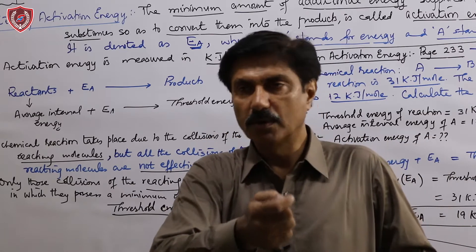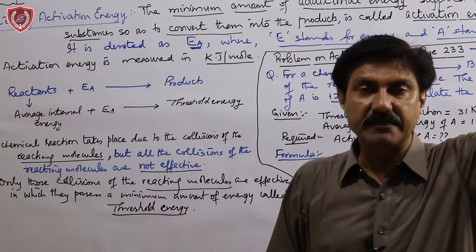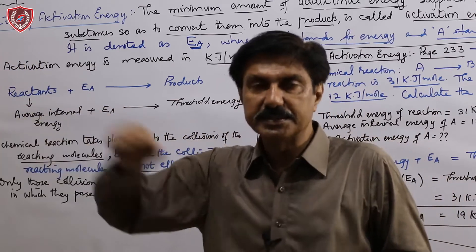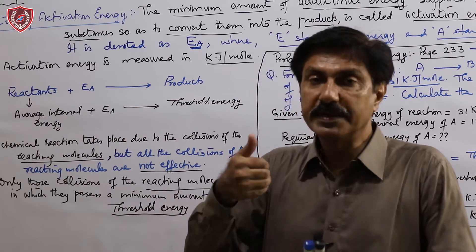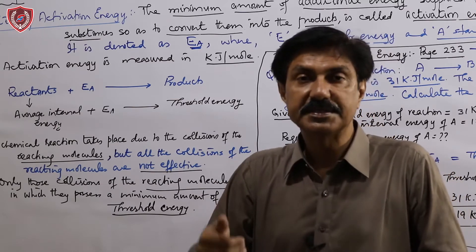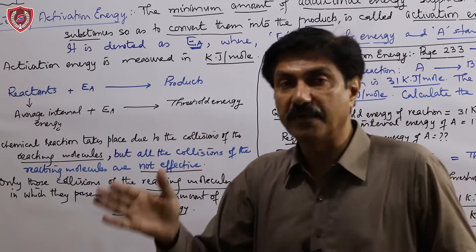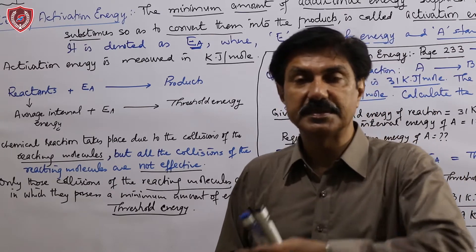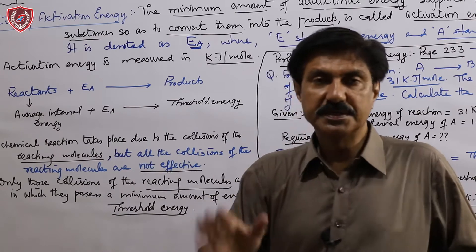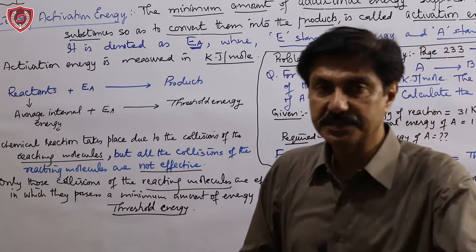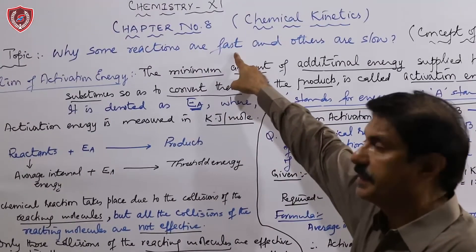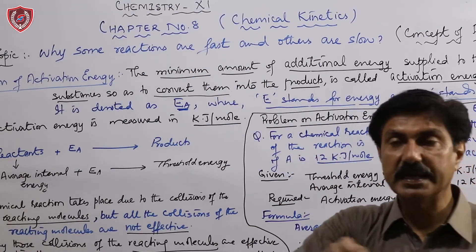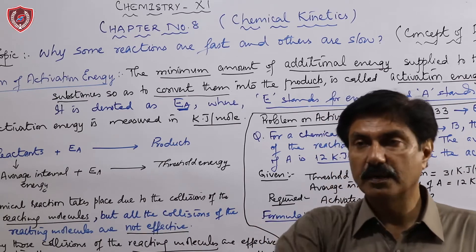On the other hand, if reactants have high average internal energy, completing such a reaction becomes relatively easier and faster. Because with high average internal energy, only a little activation energy is needed to reach threshold level, and your reaction completes quickly. So remember: any reaction is slow because it requires high activation energy to be supplied; any reaction is fast because it requires less activation energy. Reactions with high activation energy are slow; reactions with low activation energy are fast.